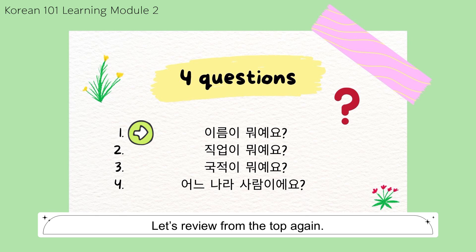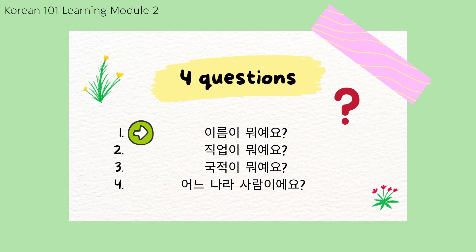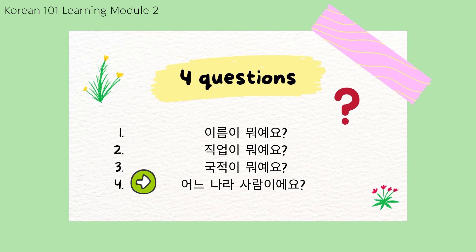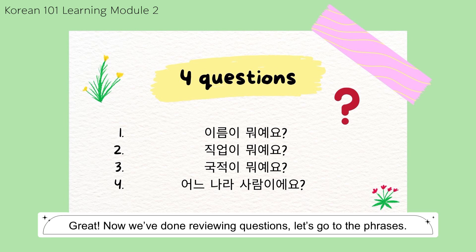Let's review from the top again. 이름이 뭐예요? 직업이 뭐예요? 국적이 뭐예요? 어느 나라 사람이에요? Great! Now we've done reviewing the questions. Now let's go to the phrases.